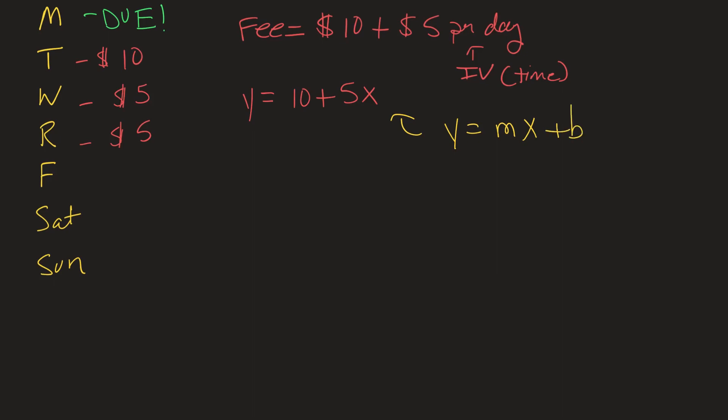This is just y equals b plus mx. It's addition so it doesn't matter which order those come in. And in this case the b is the y intercept and the m is the slope as rise over run.